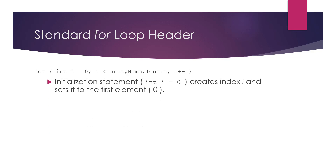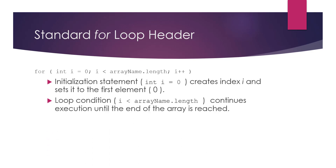Our for loop header will have an initialization statement with an integer variable i that represents the index, starting from zero for the first element. We check whether i is less than array.length so we do not exceed the number of elements. The last element will be at index array.length minus one — so for five elements the length is five and the last element is at index four.